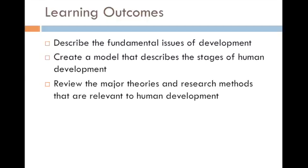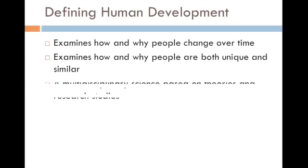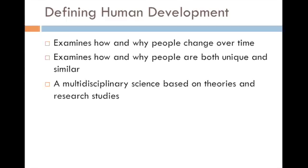Human development really consists of three major areas. First, people that study human development examine how and why people change over time — how someone goes from being an infant who's barely able to talk or feed themselves to a fully functioning adult. We also want to know how and why people are both unique and similar. Why do many babies in the US tend to walk around a year of age, for example?